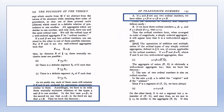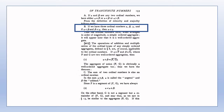Lowercase Greek letters are usually used to denote ordinal numbers. Given any pair of ordinal numbers, either they are equal or one is smaller than the other. This is a consequence of Theorem N from the previous section, Section 13. The relations of equality, less than, and greater than between ordinal numbers are defined in terms of similarity. The less than relation is shown by Theorem B to be a transitive relation between ordinal numbers.